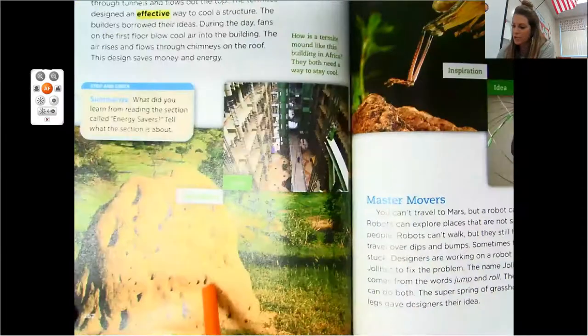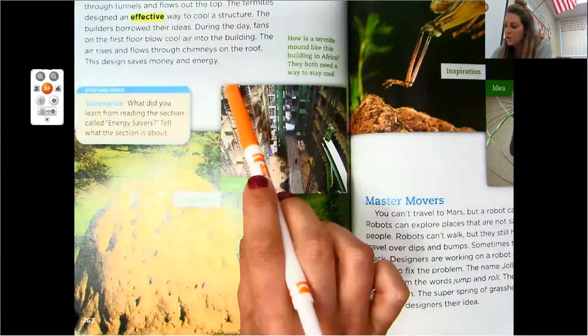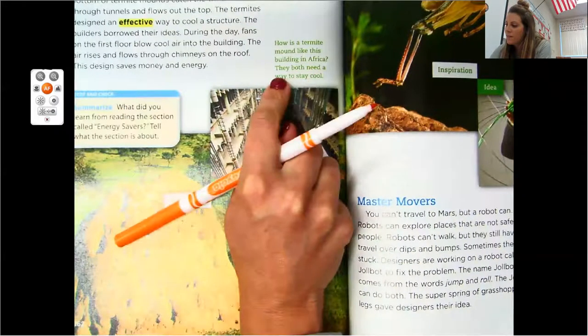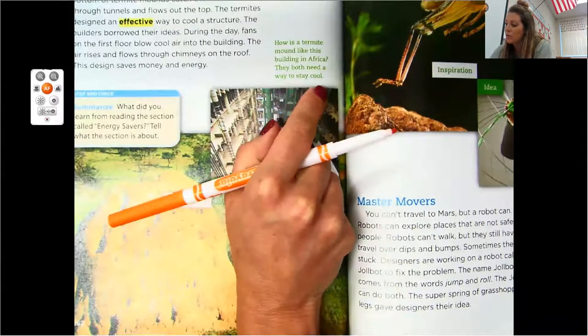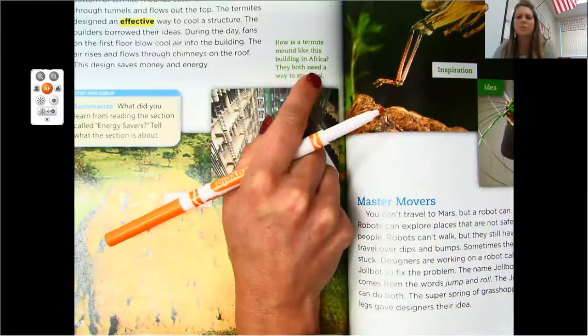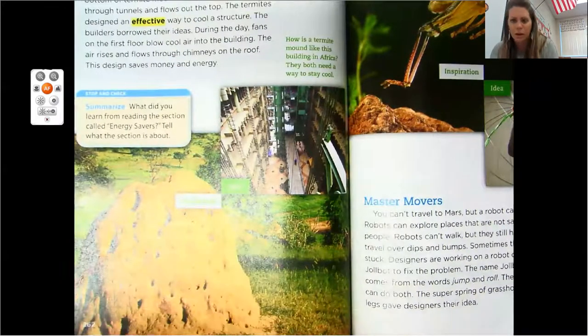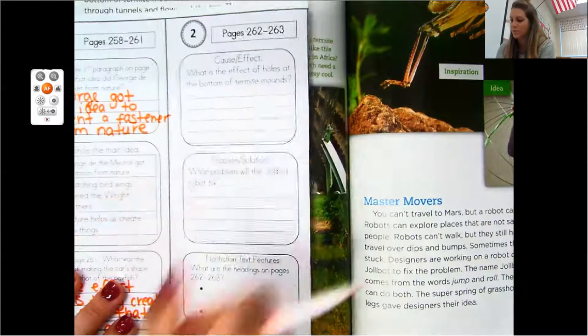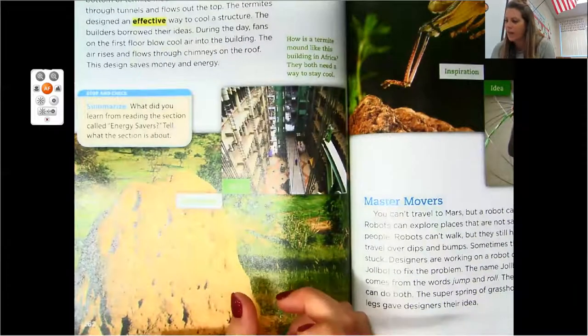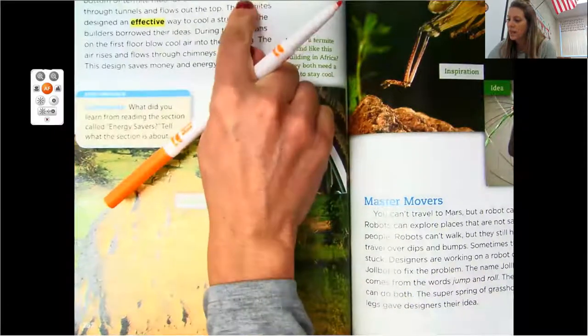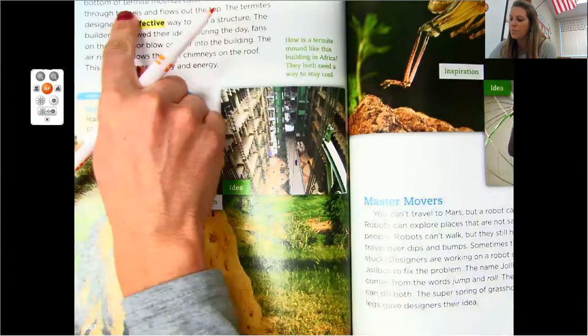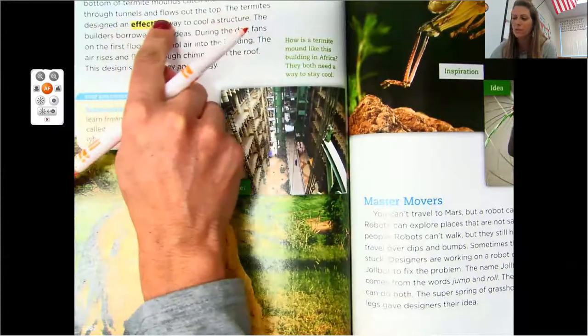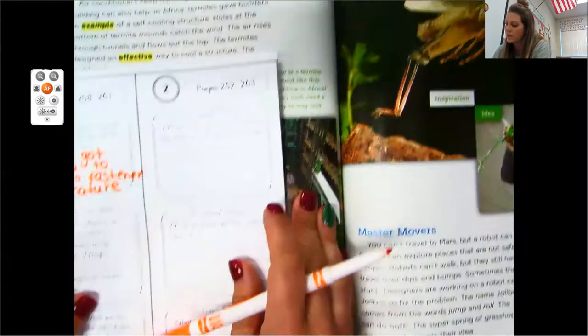So look right here. Here's their inspiration. Here's that termite mound. And then look, there's all of those little chimneys with the air. How is a termite mound like this building in Africa? They need, they both need a way to stay cool. Oh, how is a termite? Okay. So how are they alike? Because they got inspired. So I got confused on that. So what's the effect of the holes at the bottom of the termite mounds? Skim through and see if you can find that. Let's see. Holes at the bottom of the termite mound catch the wind. And because of that, the air rises through tunnels and flows out the top. Right? So what's the effect of the holes?